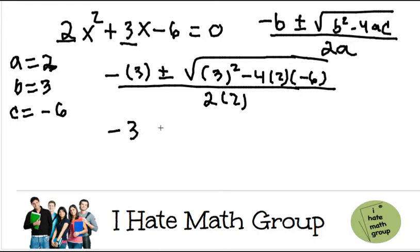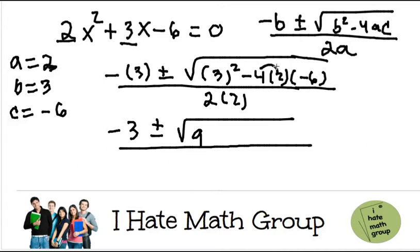This is just going to be negative 3 plus and minus, and then 3 times 3 is going to be 9. And here you have to be careful. Negative 4 times 2 is negative 8. Negative 8 times negative 6 is plus 48.